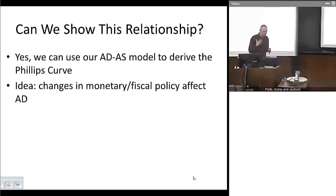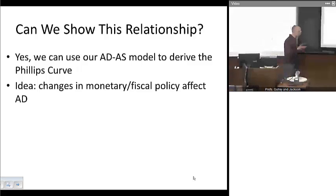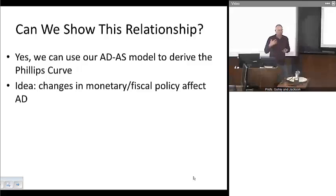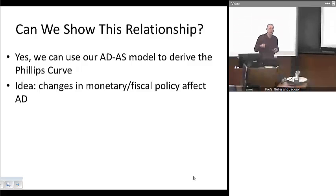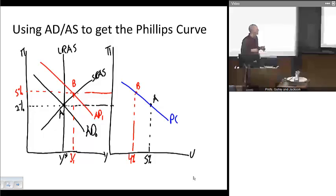What we want to demonstrate here is: can we use our standard aggregate demand-aggregate supply model to show where such a relationship might come from? What we'll see is that monetary and fiscal policy can affect aggregate demand, and that will help generate the inverse relationship between inflation and unemployment.